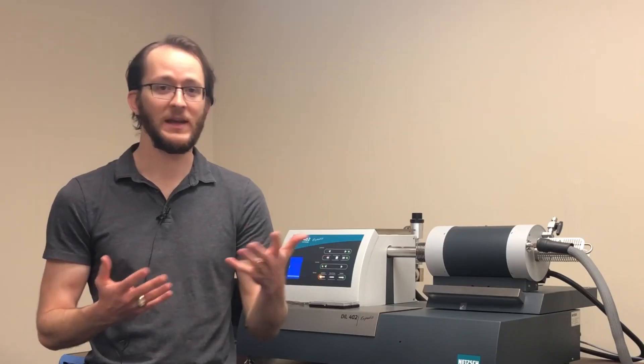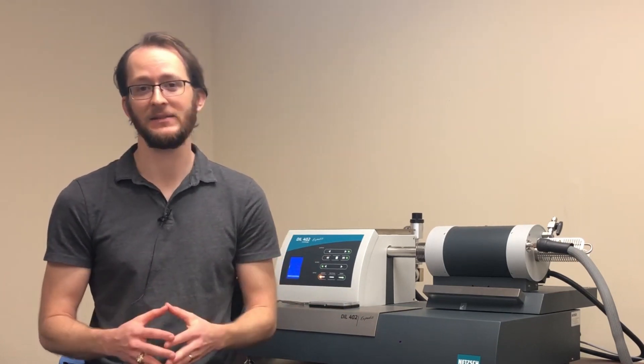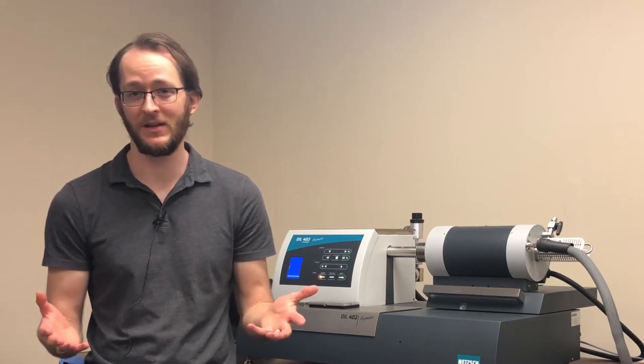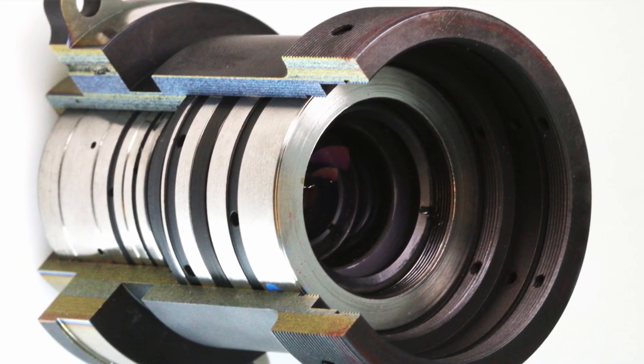Invar is the only other material out there. Invar is made from iron and nickel. It was discovered in 1896, that means it's over 130 years old. Thermal expansion is a big deal, especially for optics.